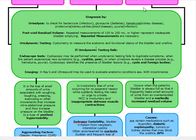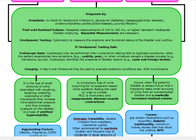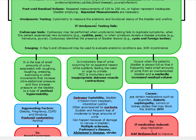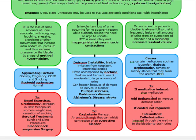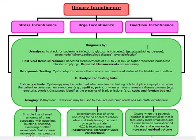Overflow incontinence is where post-void residual volume on repeated measurements will be higher than 100 to 200, representing inadequate bladder emptying — the bladder is too full with a markedly increased residual volume. It's associated with diabetic nephropathy, tumors, kidney stones, things that block the urethra, and BPH. It's often medication-induced, such as by ibuprofen, so we stop the medication and add bethanecol — a cholinergic — to improve detrusor activity.